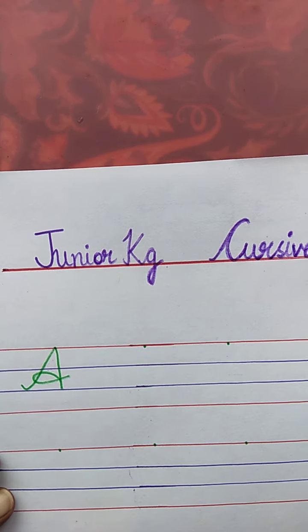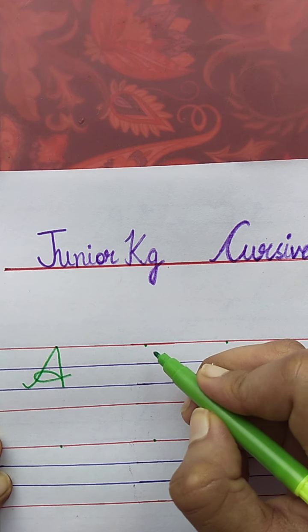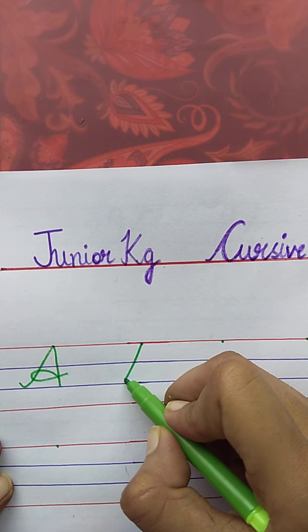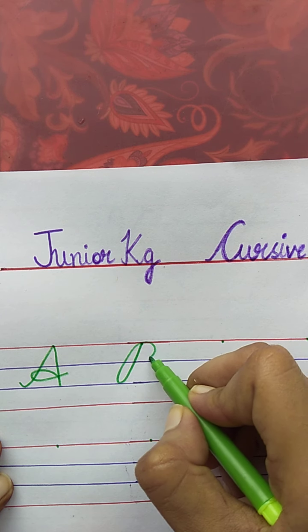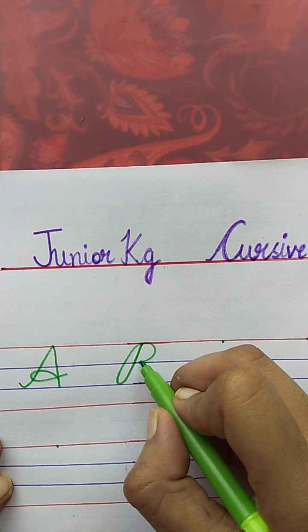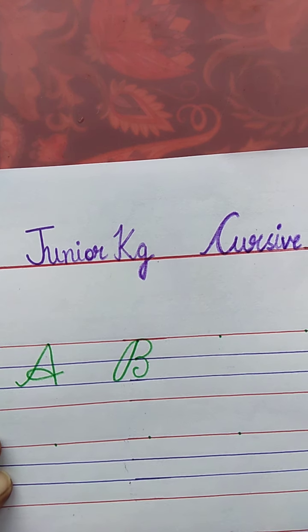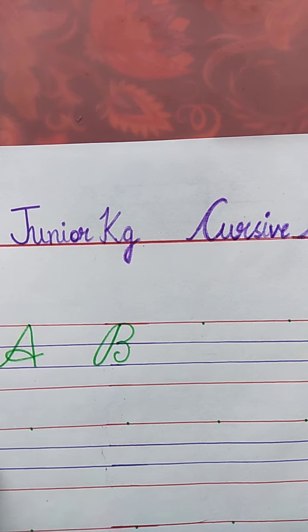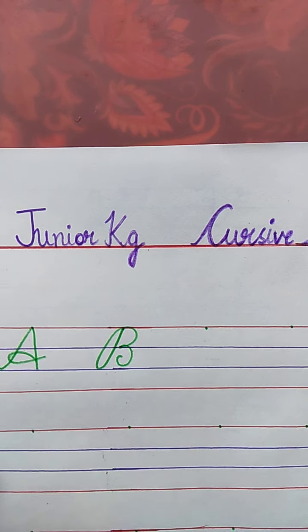Now, tell me the next letter. B. Very good. B for Ball. Draw a slanting line, one more slanting line, a semi-circle, one more semi-circle, and stop here. B for Ball. The spelling of Ball is B-A-L-L. Ball.